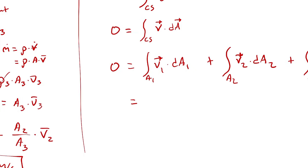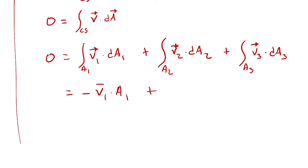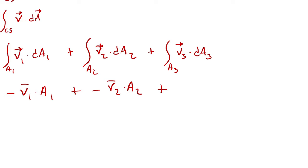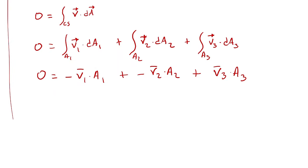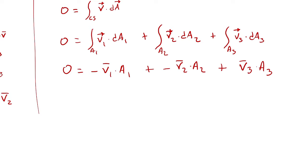V₁ and A₁ are in opposite directions, so that's negative: −V̄₁A₁. V₂ and A₂ are also in opposite directions, so again negative: −V̄₂A₂. V₃ and A₃ are in the same direction, so that's positive: +V̄₃A₃. Simplifying for uniform flow yields: 0 = −V̄₁A₁ − V̄₂A₂ + V̄₃A₃. Rearranging: V̄₁A₁ + V̄₂A₂ = V̄₃A₃.